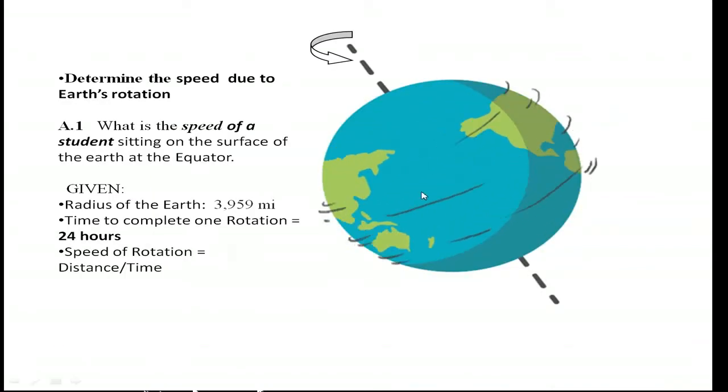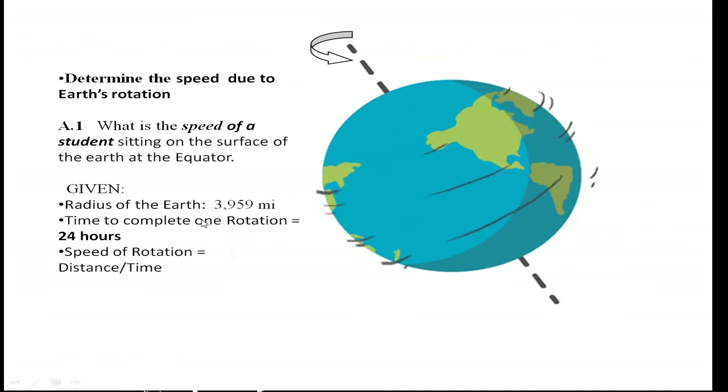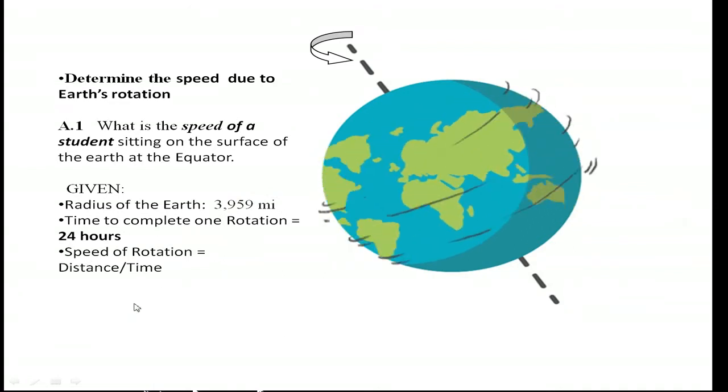The first part of the assignment is to determine the speed due to Earth's rotation. Another animation shows that a student sitting somewhere at the equator would have to go in the larger circle and come back to the same point in a time interval equal to 24 hours. The question is: what's the speed of a student sitting on the surface of the Earth at the equator? To calculate speed, you take the length around the equator, the circumference. The radius is given, and it takes 24 hours to complete one rotation. Therefore, the speed of rotation is distance divided by time. In the actual lab report, you can carry out calculations, just explaining how to proceed.